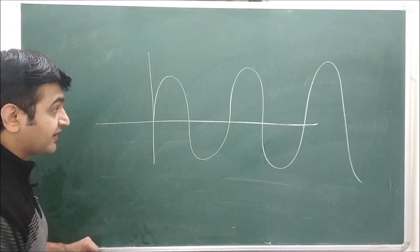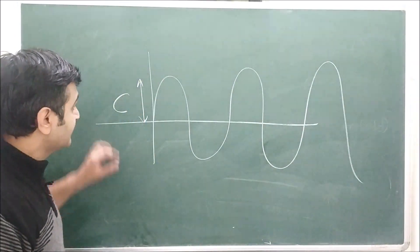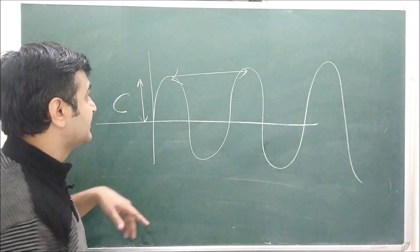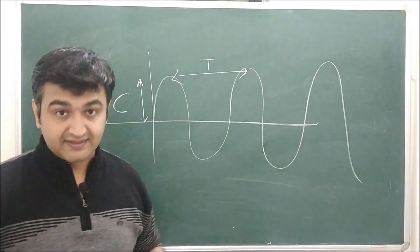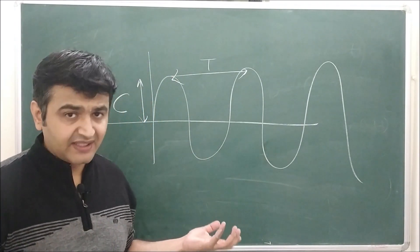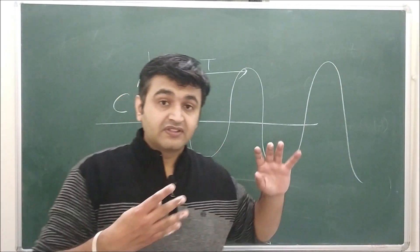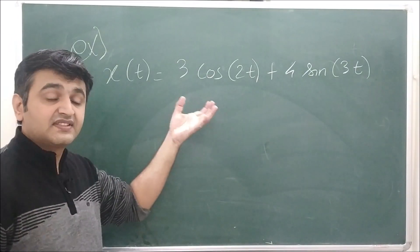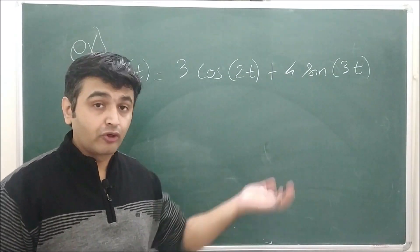The amplitude C represents the maximum displacement of the mass from equilibrium, visible as the height of the wave in the solution graph. One full cycle of the graph represents one period T. The oscillations continue forever in an undamped system. Such a system does not occur physically — what happens in practice involves damping, which we will study in the next lecture.